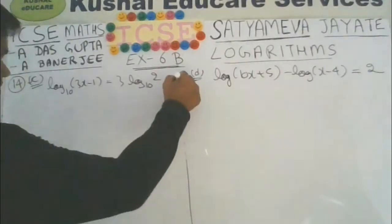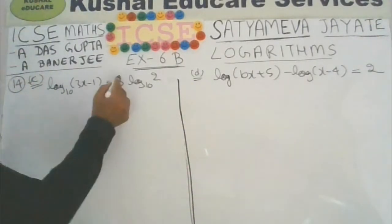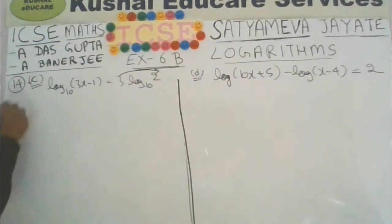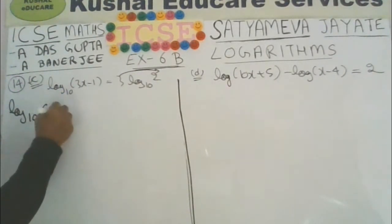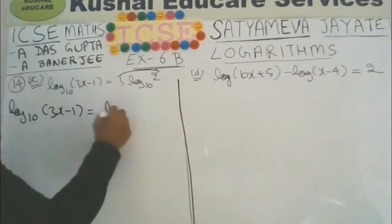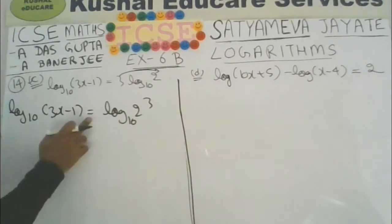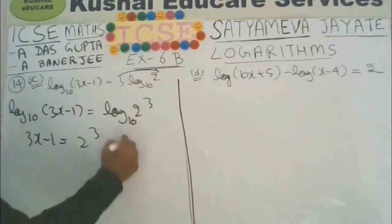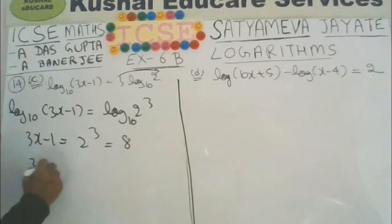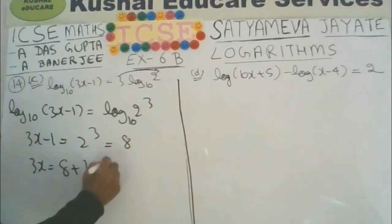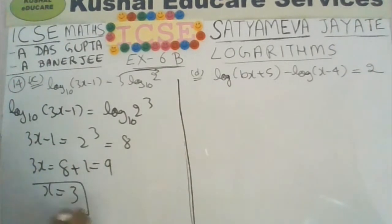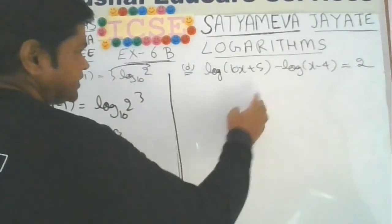Here we see 3, so in the original expression it must be an index: log of 3x minus 1 base 10 equals log of 2 cubed base 10. Since the logs are equal, 3x minus 1 must equal 2 cubed, which is 8. So 3x equals 8 plus 1 equals 9, giving x equals 3.